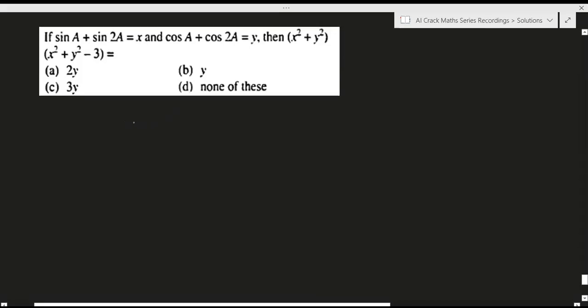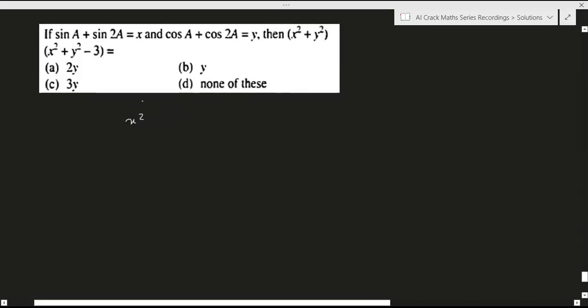So let's write x squared first. I'm not scared because I can see that in case of x squared we have sin a plus sin 2a the whole square, that contains sin squared a plus sin squared 2a plus 2 sin a sin 2a. In case of y squared we have cos squared a plus cos squared 2a, so clubbing cos squared a and sin squared a that becomes 1. So I can see some way forward in the question.